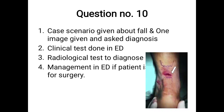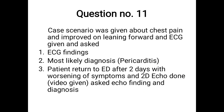Question ten: a case scenario of a fall with an image. Diagnosis: Achilles tendon rupture. Clinical test done in ED: Thompson test. Radiological test: MRI. ED management if the patient is not willing for surgery: apply a below-knee slab in plantar flexion.